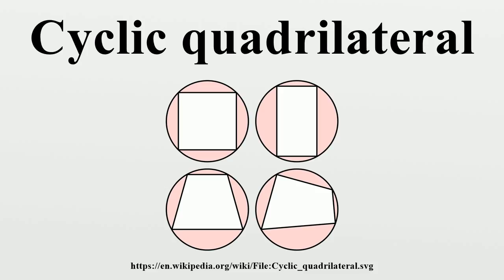Diagonals: in a cyclic quadrilateral with successive vertices A, B, C, D and sides a equals AB, b equals BC, c equals CD, and d equals DA, the lengths of the diagonals p equals AC and q equals BD can be expressed in terms of the sides, showing Ptolemy's theorem. According to Ptolemy's Second Theorem, using the same notations, for the sum of the diagonals we have an inequality. Equality holds if and only if the diagonals have equal length, which can be proved using the AM-GM inequality.